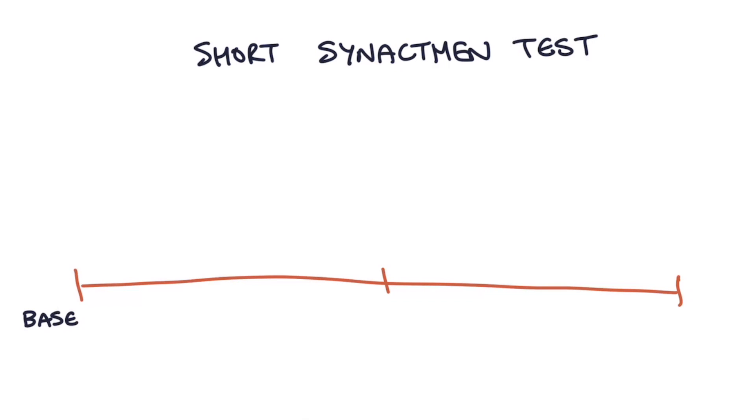To test for primary adrenal insufficiency, we use the short synactin test. Ideally, this test should be done early in the morning. It involves giving artificial ACTH called synactin, which is used to try to stimulate the adrenal gland to produce cortisol.